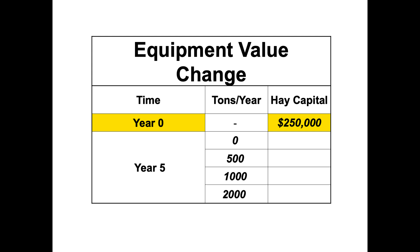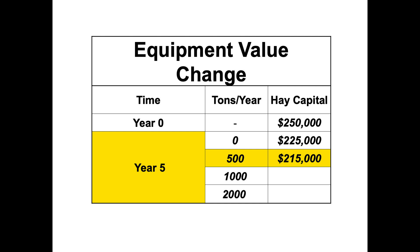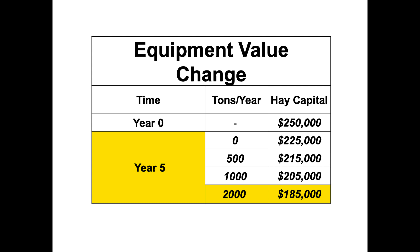Here's how the equipment value changes over five years depending on use. Starting at $250,000: if parked in the barn, after five years it's worth $225,000. Producing 500 tons per year, it drops to about $215,000. At 1,000 tons per year — roughly 200-250 acres of alfalfa — it goes down to about $205,000. At a very high production level of about 500 acres worth, it drops to around $185,000.